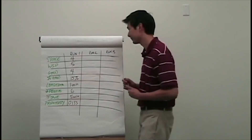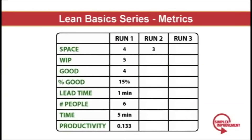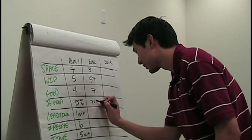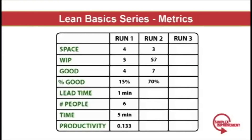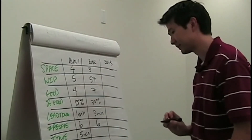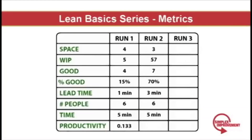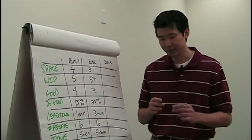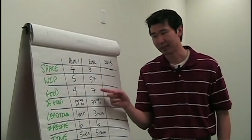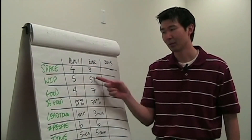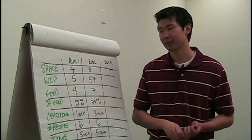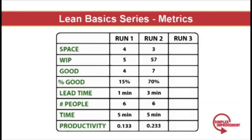Let's review our metrics for the second run. We only used three tables. Work in process had 57 units. They produced seven good planes. 70% were good. The lead time for the X-Plane was three minutes. There were six total people in the system, and we ran for five minutes. Productivity — good parts divided by people divided by time — was 0.233. The benefits of mass production over craft production are clear: they nearly doubled their good planes produced, but work in process was through the roof — 57 compared to five. There was a near 75% productivity gain from the first to the second run.